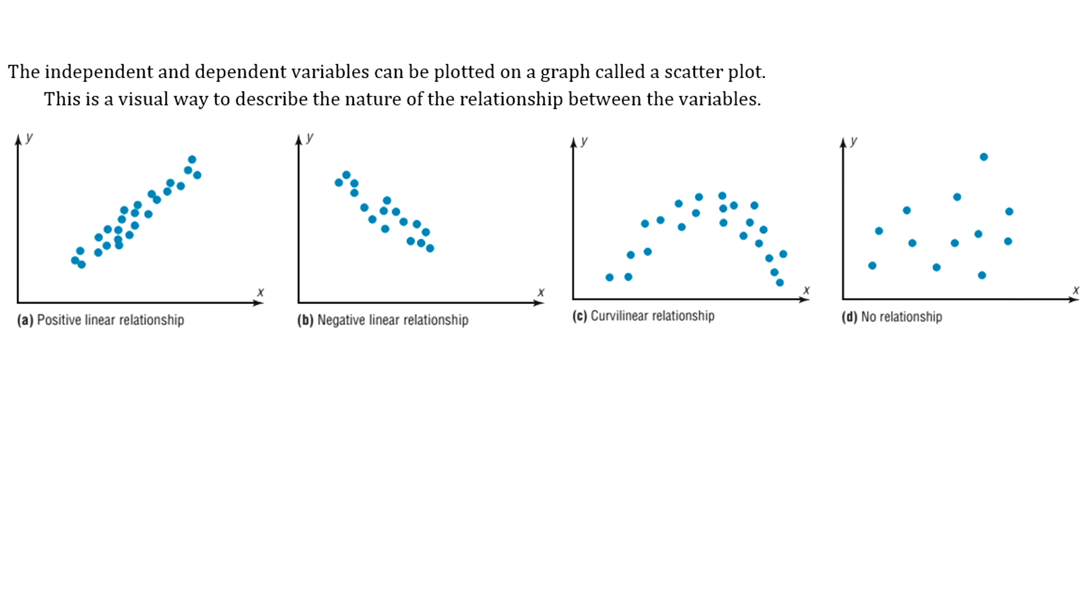The first thing you want to do when determining whether two variables are related is to graph your data to get a visual way of seeing the relationship. We do that using a scatter plot, which just means plotting all your points and visually looking at your data. Here are some examples of things you might see when you plot your data values.